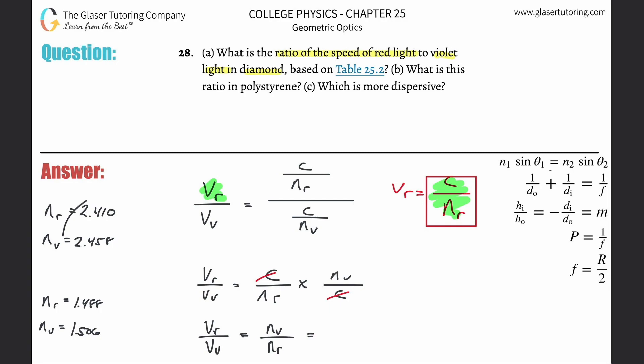So just plug in the numbers. We're going to have 2.458, all divided by 2.410. And basically we're going to find it. So 2.458 divided by 2.410, and we're going to get about 1.020. That's probably good enough. So that's about the ratio.